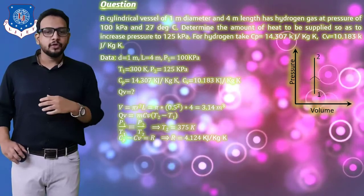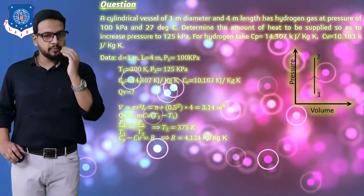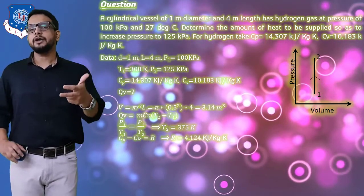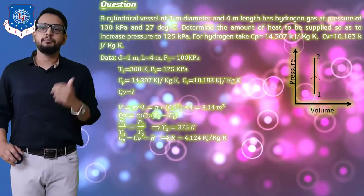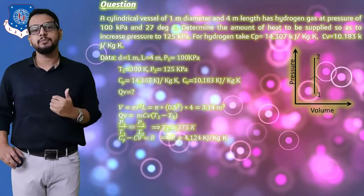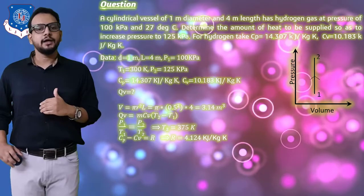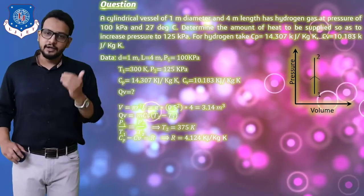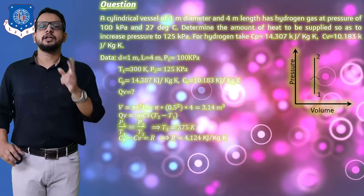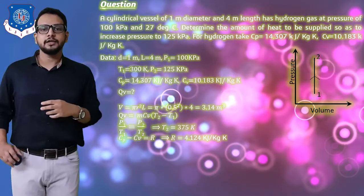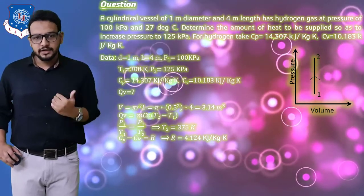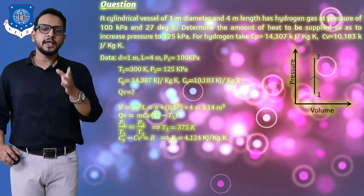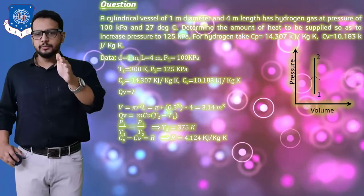Since T1, p1, and p2 are known, we determine T2 using the pressure-temperature relation P1/T1 = P2/T2. Converting T1 = 27°C = 300 K and substituting values, we get T2 = 375 K. We also calculate R = cp - cv = 14.307 - 10.183 = 4.124 kJ/kg·K.